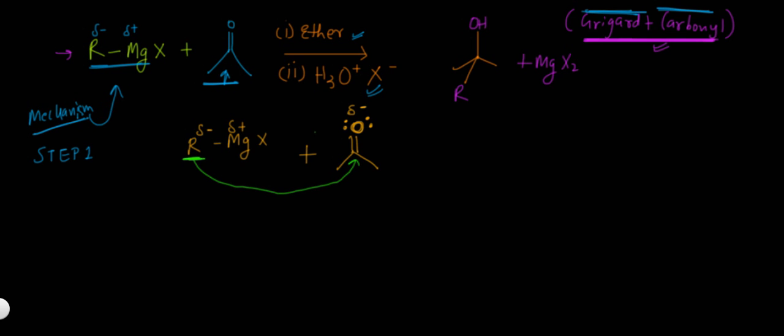There, it attacks. Now what would happen is this bond will break, and let me write the final product of this step. The final product will be halomagnesium alkoxide. I'm going to write it now. Alright, this is, and you got this, and this. This is halomagnesium alkoxide.